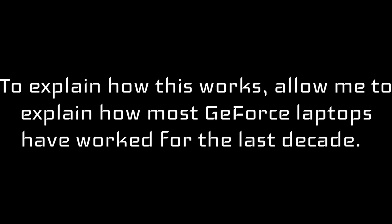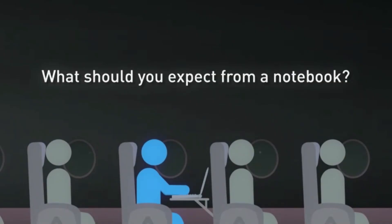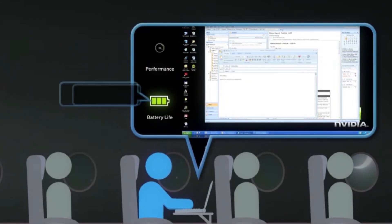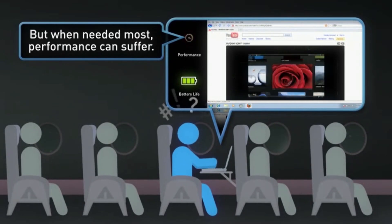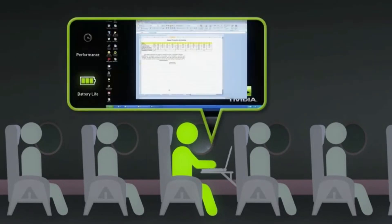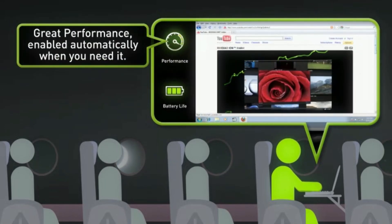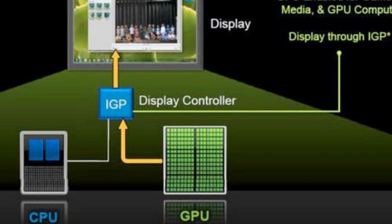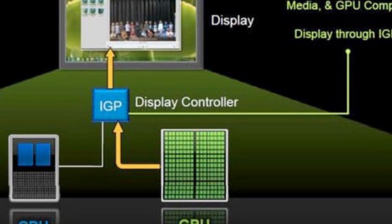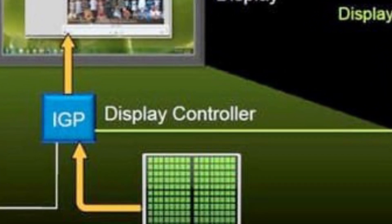To explain how this works, allow me to explain how most GeForce laptops have worked for the last decade. They use NVIDIA Optimus switchable graphics for maximum performance and efficiency. Optimus allows the integrated graphics and dedicated graphics to run together on a single system, relying primarily on the power-efficient integrated graphics, then automatically switching to the dedicated NVIDIA graphics for intense workloads such as video games. The drawback comes from the dedicated GPU being forced to run through the integrated GPU's display controller, and Intel does not support variable refresh rates yet, with the exception of some of their low-end 11th gen CPUs.